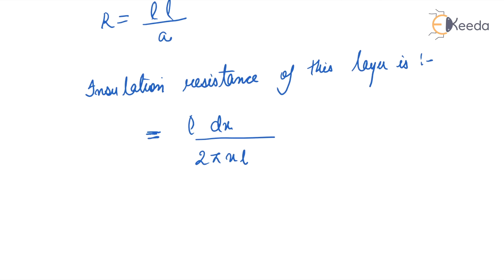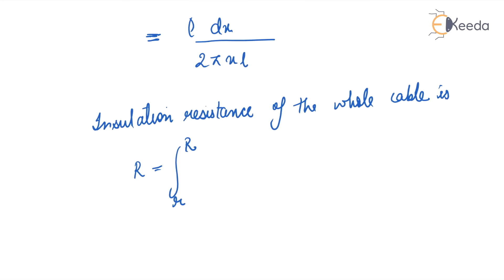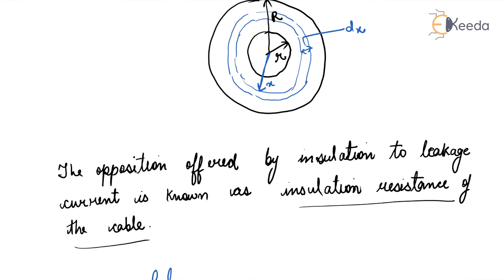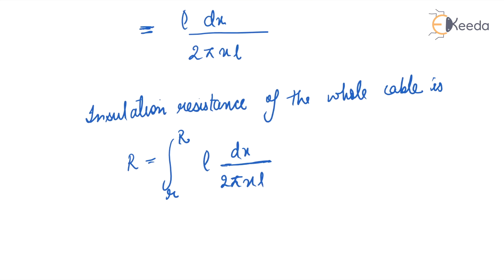Now, the insulation resistance of the whole cable is R equals the integral from r to R of ρ dx / (2πxL). The limits are from small r to capital R for the insulation resistance of the whole cable.